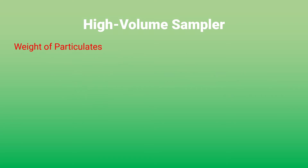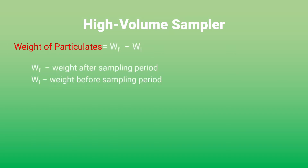The volume measured for the weight of particulates is the weight difference of the filter, measured before and after the sampling period. The weight difference is the weight of particles times the diameter of the particulate being measured. Varying filters can measure particulates of a given diameter range. Sampling period can range between 6 and 24 hours and are about 2000 cubic meters.